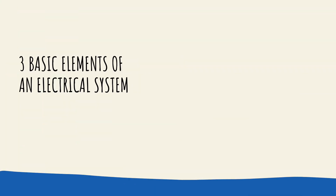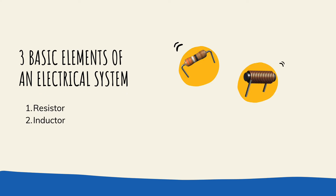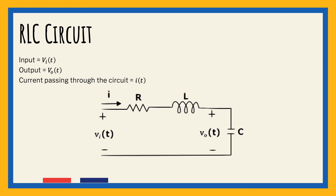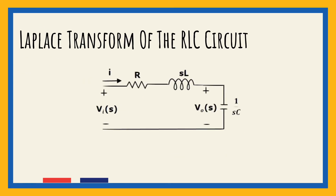In this section, let us represent an electrical system with a block diagram. Electrical systems contain mainly three basic elements: resistor, inductor, and capacitor. Consider a series RLC circuit as shown in the figure, where V_i(t) and V_o(t) are the input and output voltages, while I(t) is the current passing through the circuit. This circuit is in the time domain. By applying the Laplace transform to this circuit, we will have the circuit in the S domain.